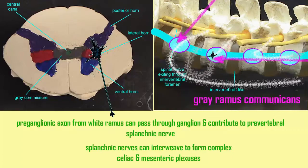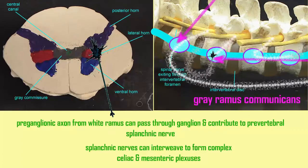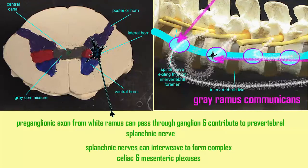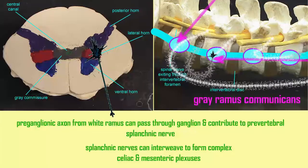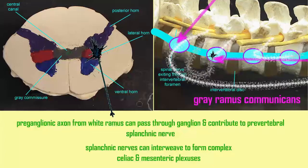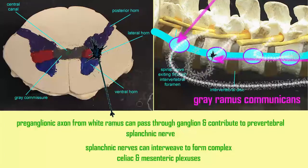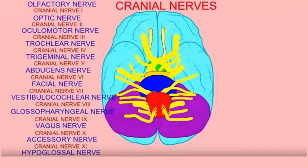These splanchnic nerves can be quite complex. They can interweave to form plexuses like the celiac and superior and inferior mesenteric plexuses before the postganglionic axons project to the effector organs.